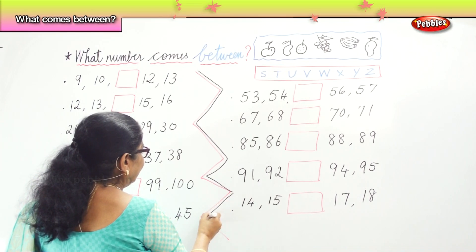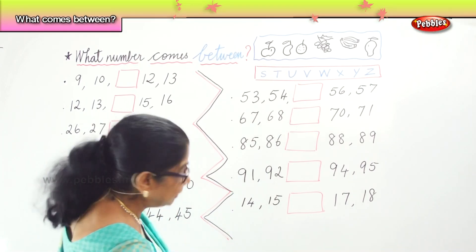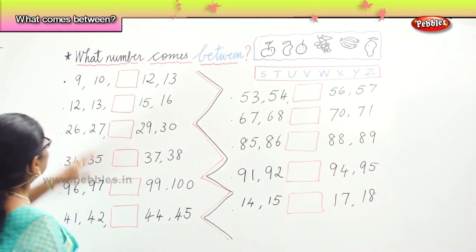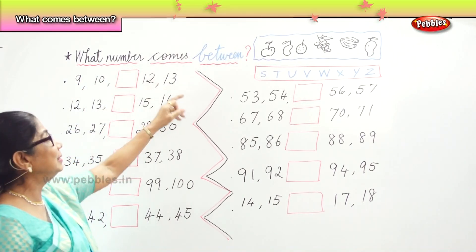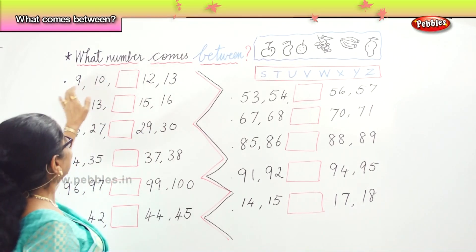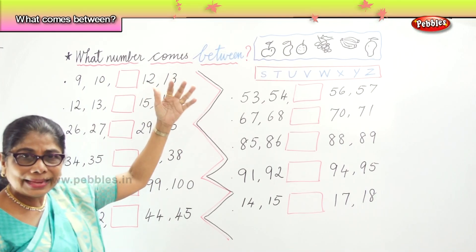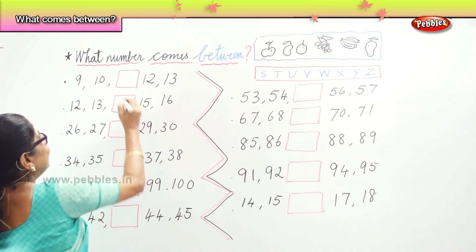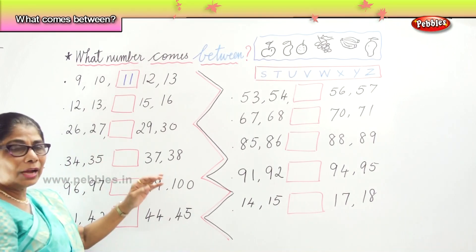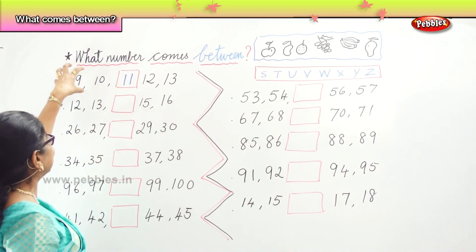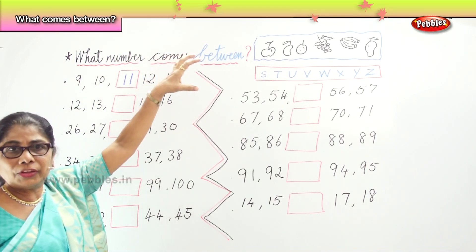Let's begin with the first one. What number is there? 9, 10, __, 12, 13. The number that comes between 9 and 11 is — 11. Very good. Count and say: 9, 10, 11, 12, 13.